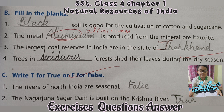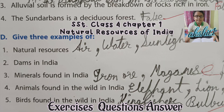Write T for true or F for false. First, the rivers of North India are seasonal — it is false, because the rivers of North India are perennial. They are fed by melting snow and carry water throughout the year. Second, the Nagarjun Sagar dam is built on the Krishna river — it is true. Third, alluvial soil is formed by the breakdown of rocks rich in iron — it is false.